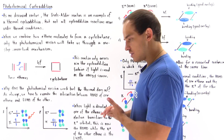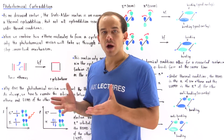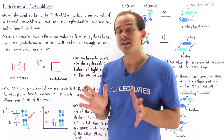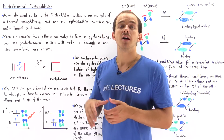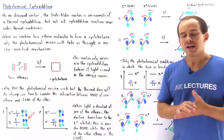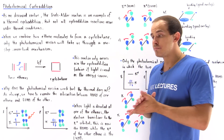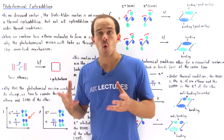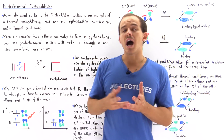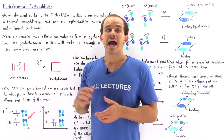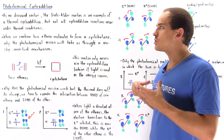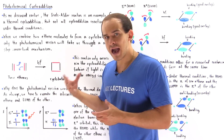The next question is: why is there a preference? Why does this reaction take place under light conditions but not under thermal conditions? To answer this question, let's discuss the interaction between the highest occupied molecular orbital of one of these ethene molecules and the lowest unoccupied molecular orbital of the second ethene molecule.